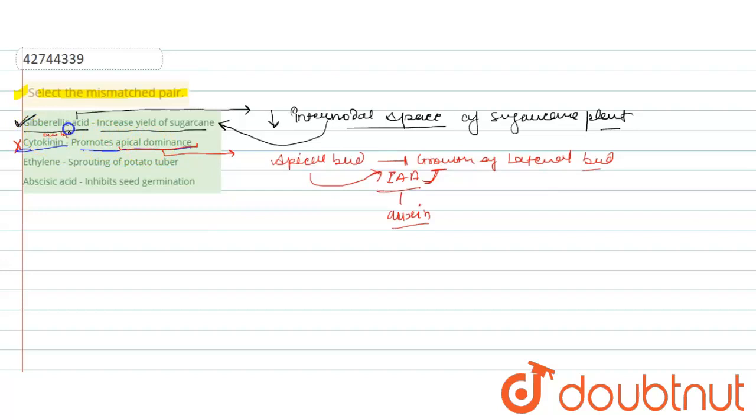Now come to the next one. Ethylene is given, and ethylene promotes the sprouting of potato tuber. So this is correctly matched.